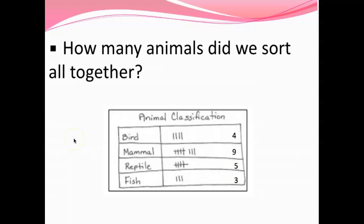How many animals did we sort all together? We're talking not about the categories but about the animals. Pause and solve for how many animals we sorted all together. You should have added four for four birds, nine for nine mammals, five for reptiles, and three for fish. Four plus nine plus five plus three equals 21 animals all together.